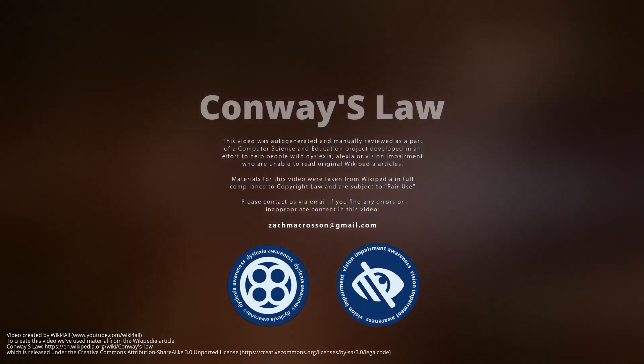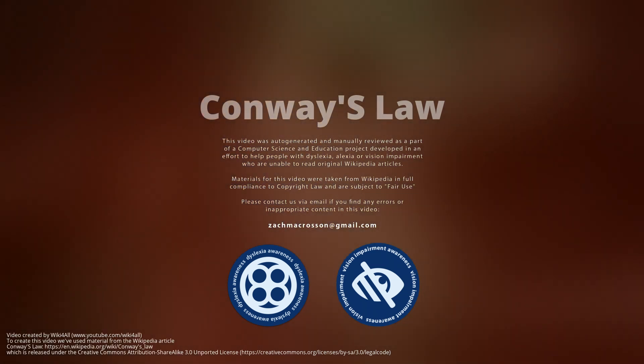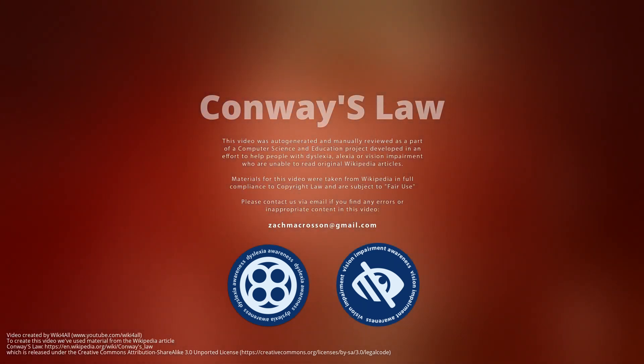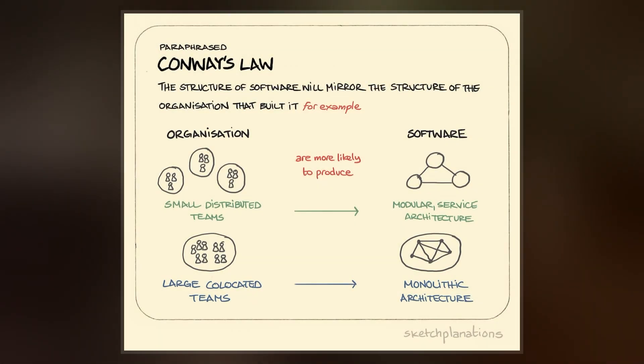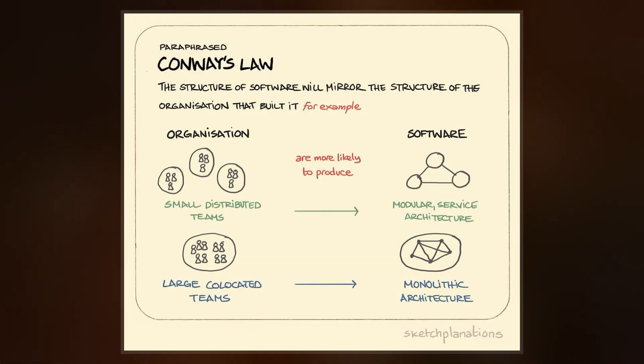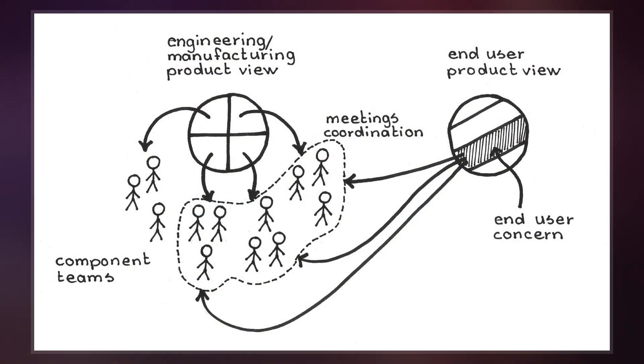Conway's law is an adage stating that organizations design systems that mirror their own communication structure. It is named after computer programmer Melvin Conway, who introduced the idea in 1967.